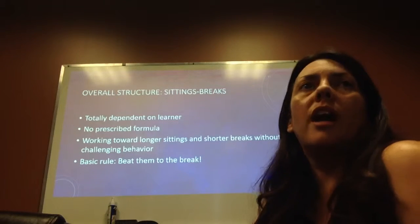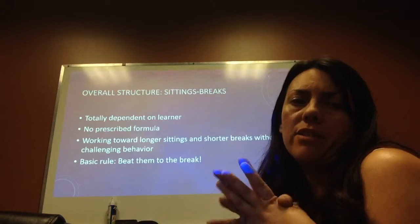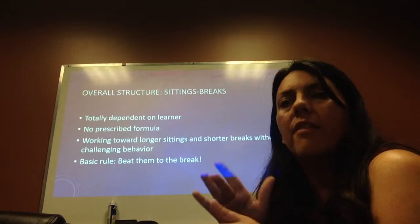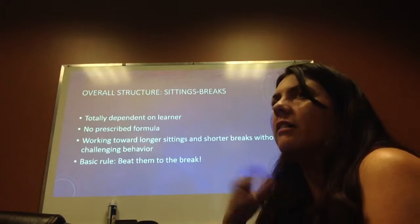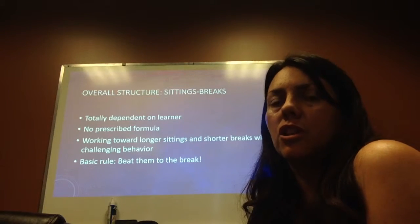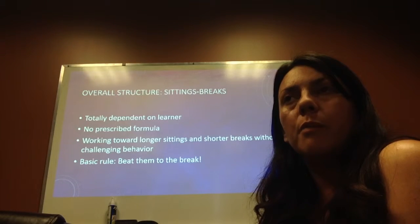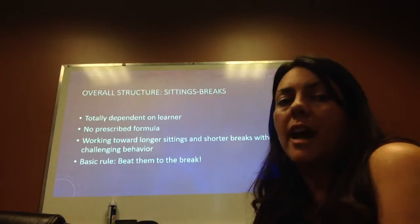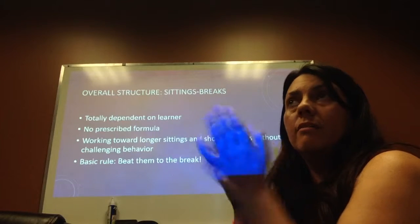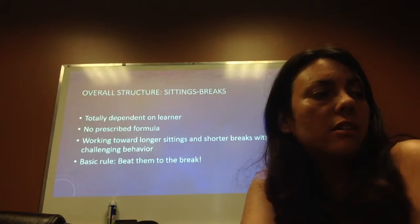The basic rule is you want to beat them to the break. If a kid starts to have a meltdown on the fourth or fifth trial, do three trials, make those super reinforcing, and let them go. Once you see that they're enjoying the reinforcement from those three trials, push for four, then five. Eventually work becomes more reinforcing. The skill of the therapist is predicting when to end the sitting — once you see challenging behavior, you have to push through because you can't reinforce it with a break.